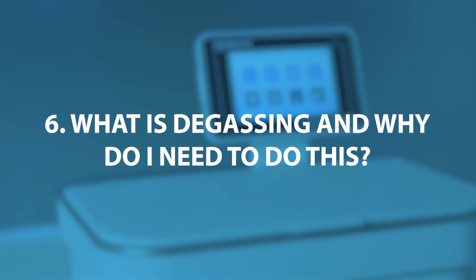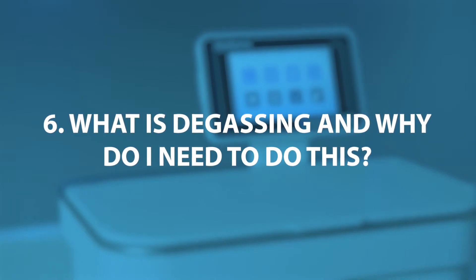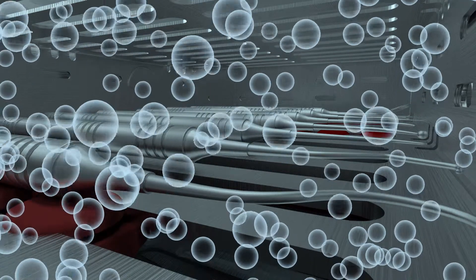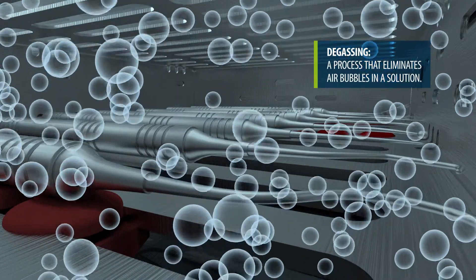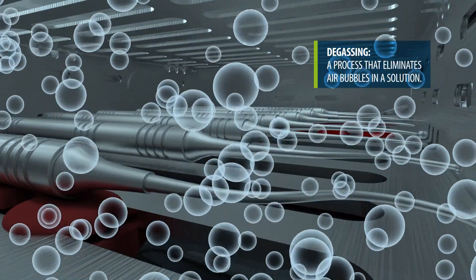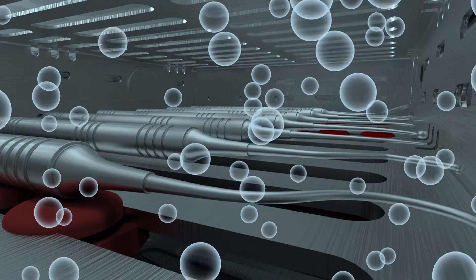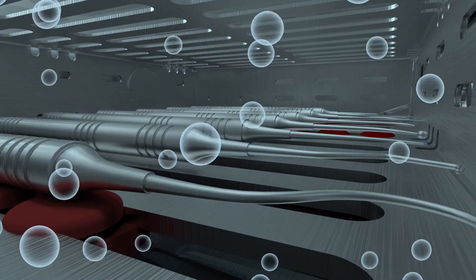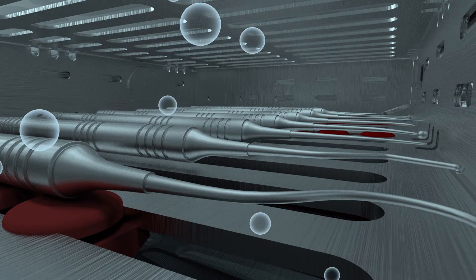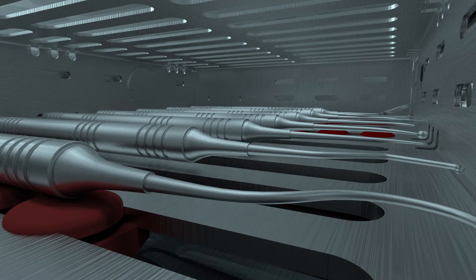What is degassing and why do I need to do this? Degassing is the process of eliminating large air bubbles in a solution. Before cavitation can become effective in an ultrasonic cleaner, the gas trapped in the liquid must be removed. If it's not removed, the cavitation bubbles will fill with this gas, cushioning the implosion force.